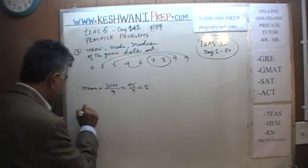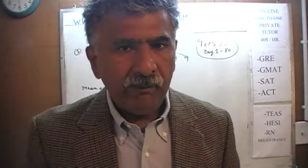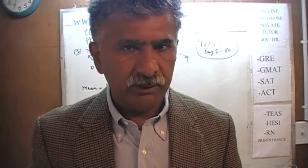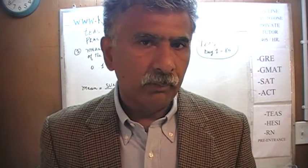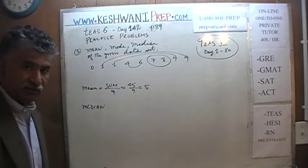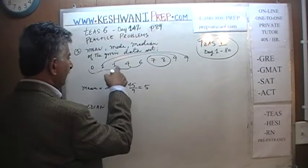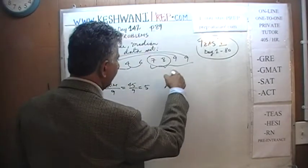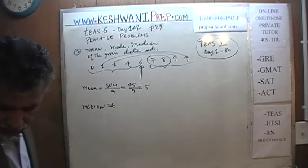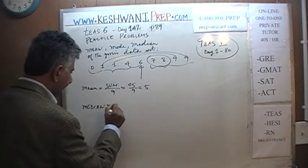What's the median? Median is the middle number after the numbers have been arranged in ascending or descending order. It doesn't have to be one or the other — as long as they are arranged in order, whatever value falls in the middle is your median. Here we have 9 numbers, so the median is going to be the fifth one. We have 4 on the left — 0, 1, 1, 4 — and 4 on the right — 7, 8, 9, 9. The one that sits in the middle is 6. The median is 6.